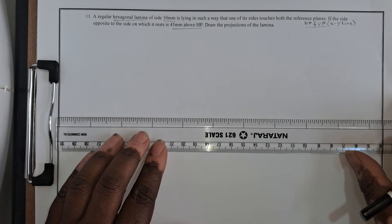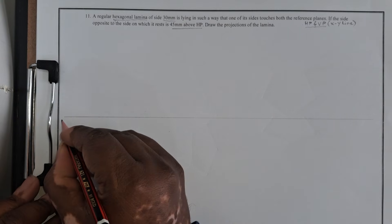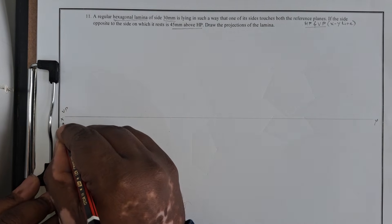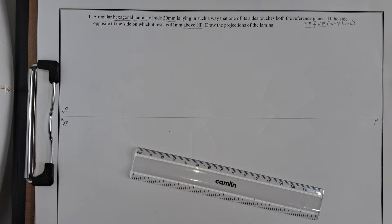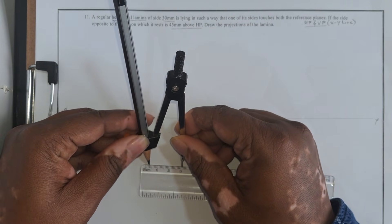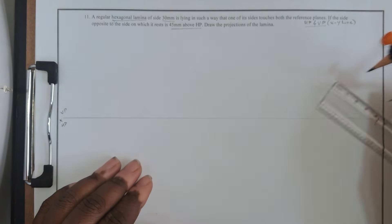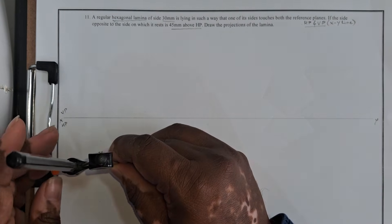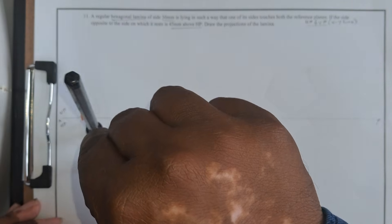The first step is to draw the XY line. So I have my XY, VP, and HP. Next we have a hexagonal lamina of size 30 mm, so let us draw the hexagonal lamina in edge condition. Before we do that I shall measure 30 mm using the compass — 30 mm radius using the compass. Keeping this 30 mm I shall draw a hexagon by drawing the circle.